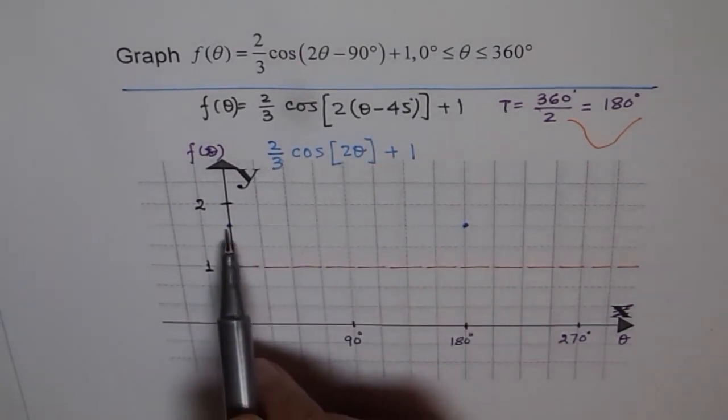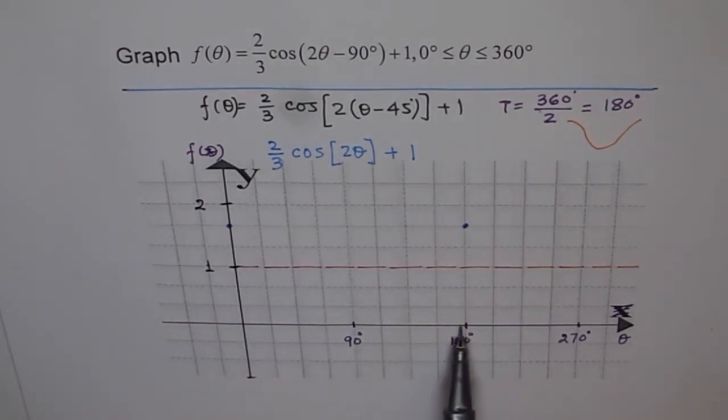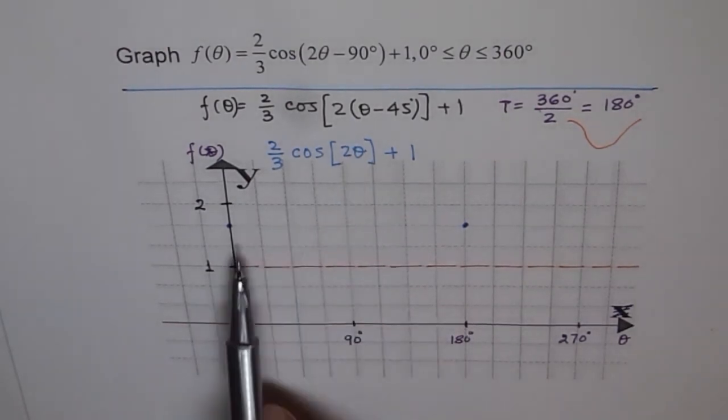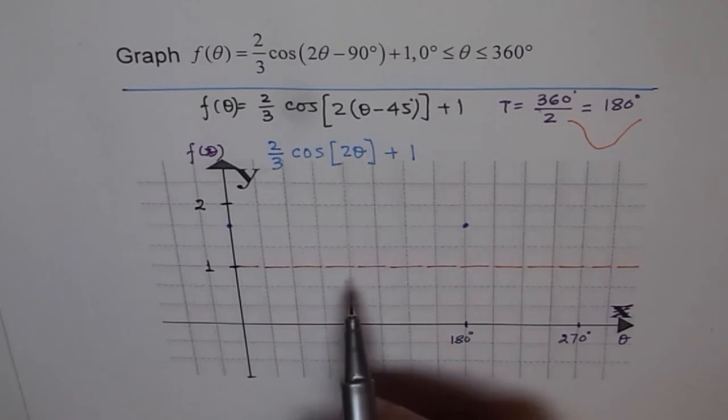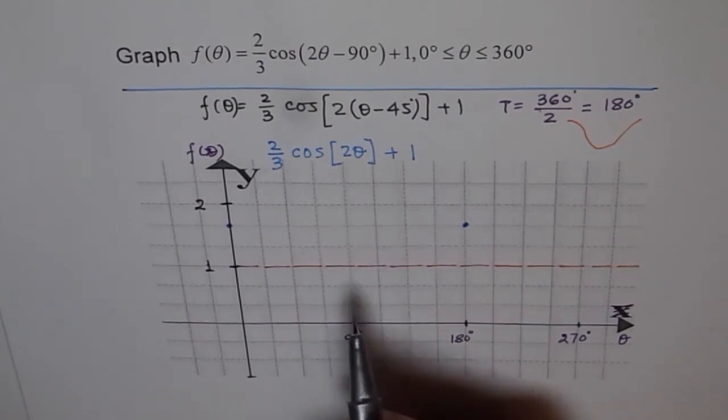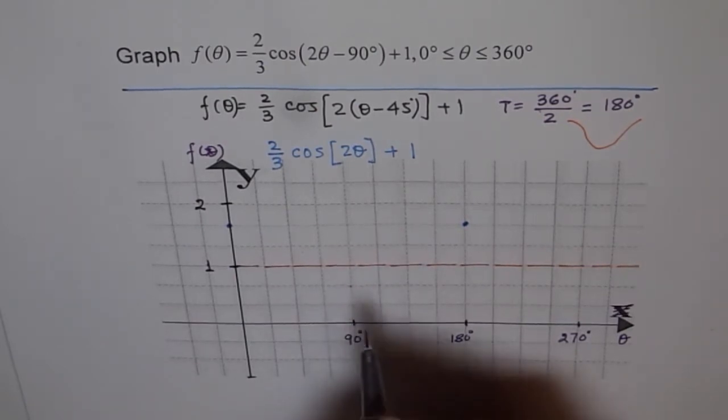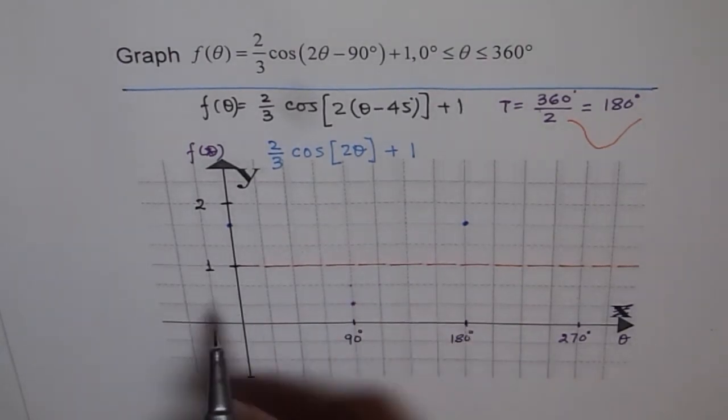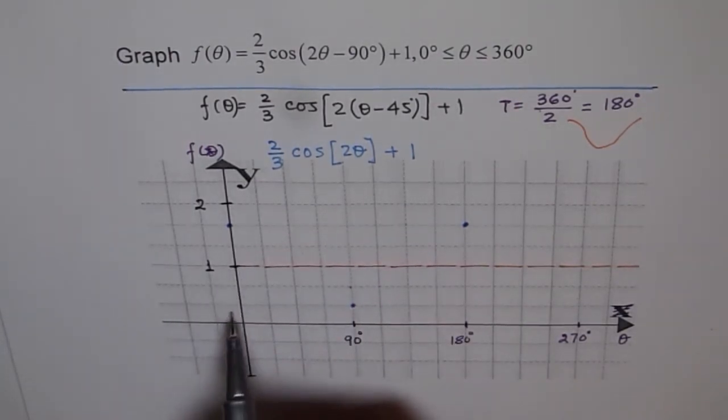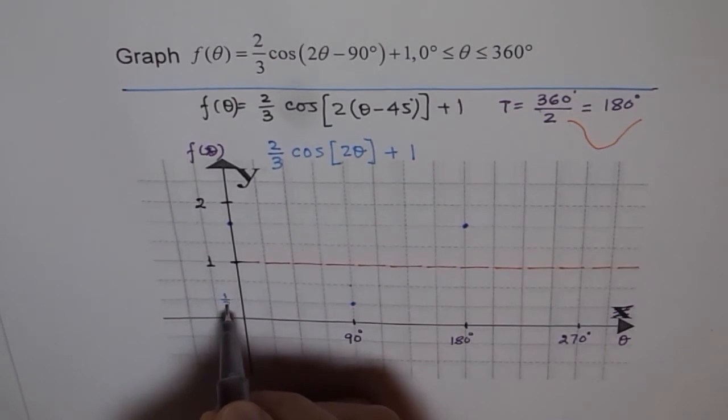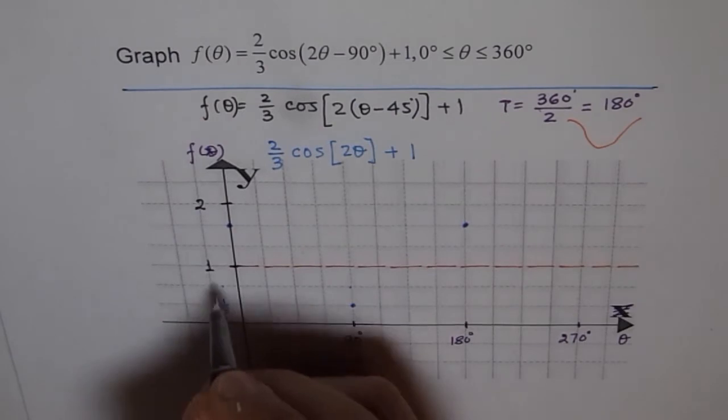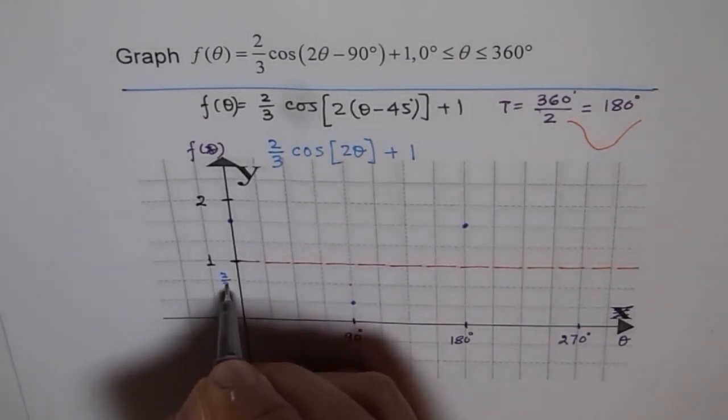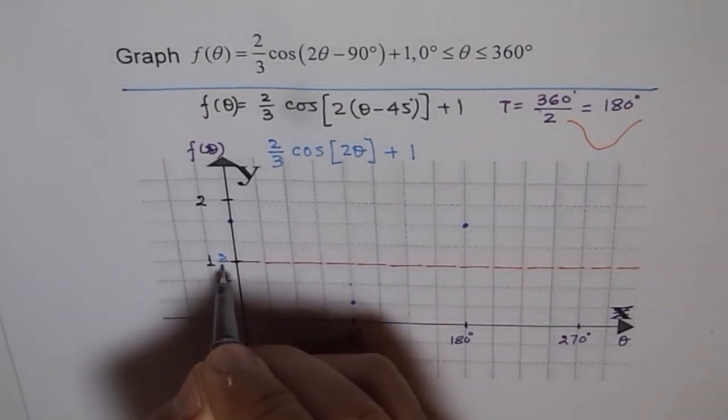My time period is from 0 to 180 degrees for this particular graph. I have my maximum points here, and the minimum will be right in the center. It will be 2 over 3 below the axis of symmetry - 1 over 3 and 2 over 3. Since we have taken a scale where each division is 1 third, this is 1 third, 2 third, 3 over 3 is 1.